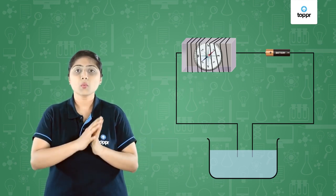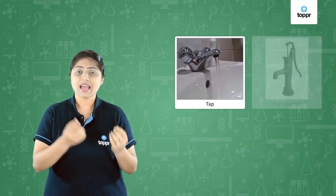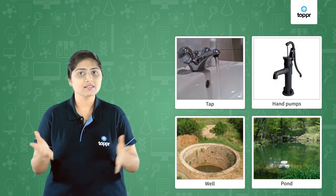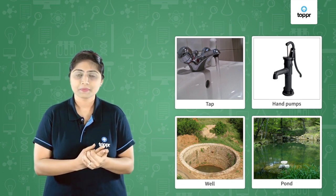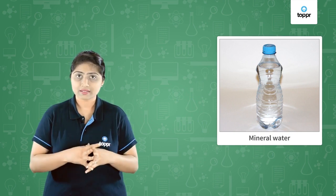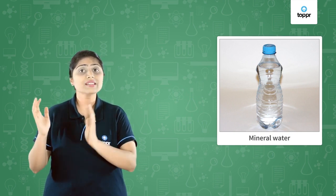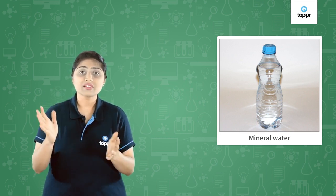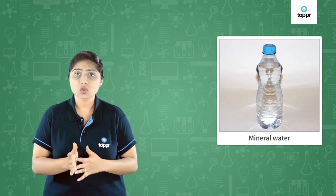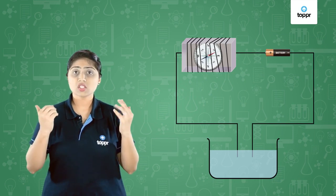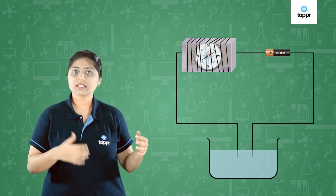That is the reason why water from taps, hand pumps, wells, ponds, and the sea all conduct electricity, because there are certain minerals or salts always dissolved in them. Mineral water is very good for health, but such water conducts electricity. So we have to be very careful while touching electrical appliances with wet hands or while standing on a wet floor. Salt solutions do conduct electricity.